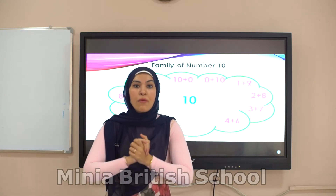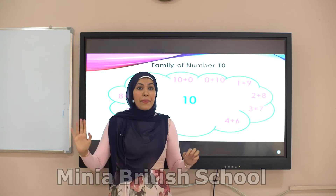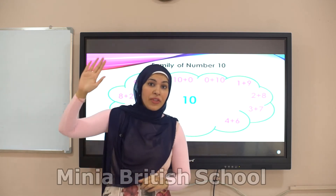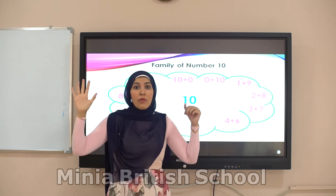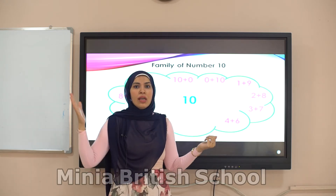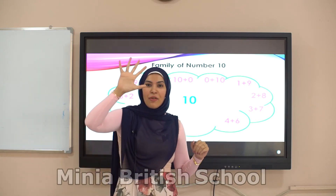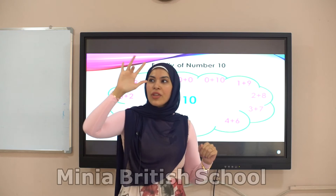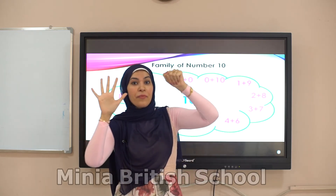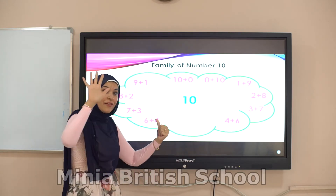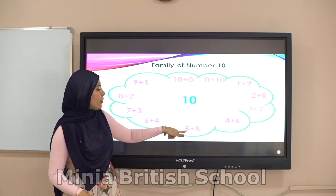The last number — number five says: hey, number ten, if you put me with the same number, that number is five, I will make ten. Count five: one, two, three, four, five. Now close five fingers — how many fingers are left? Five. So the last pair is five and five.